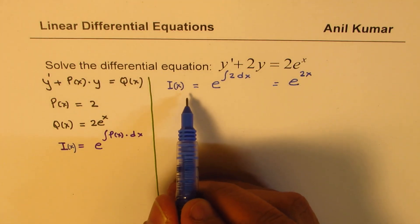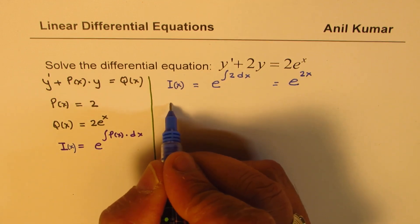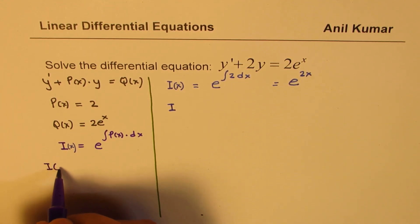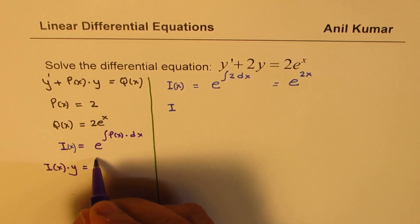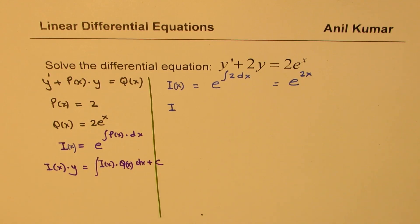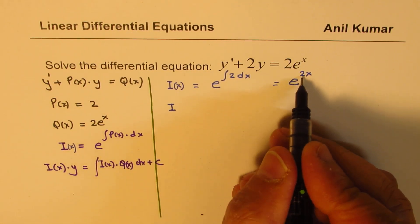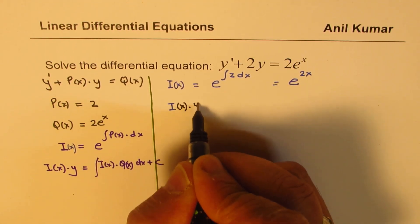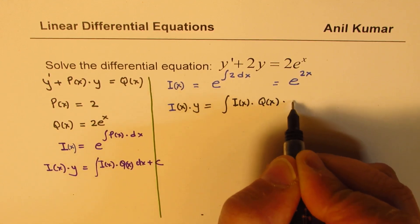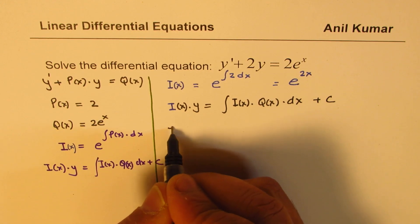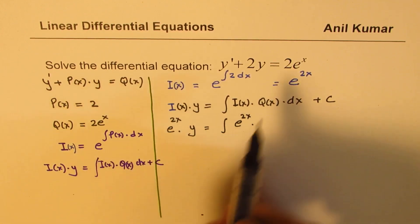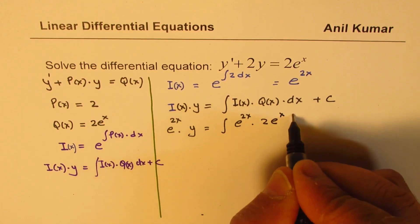Since the integrating factor is e to the power of 2x, we write: the integrating factor times y equals the integral of the integrating factor times q(x) dx plus c. So we get e to the power of 2x times y equals the integral of e to the power of 2x times 2 times e to the power of x dx plus c.